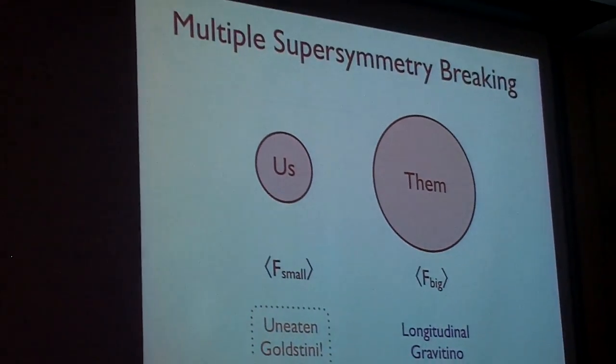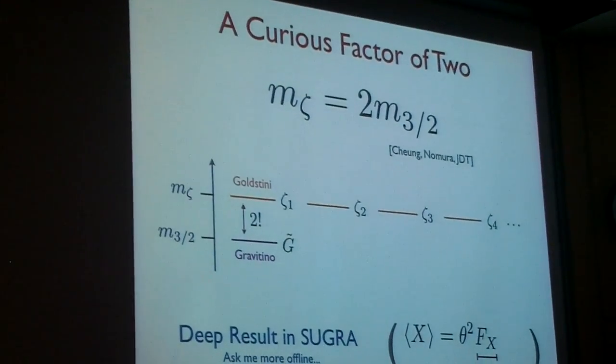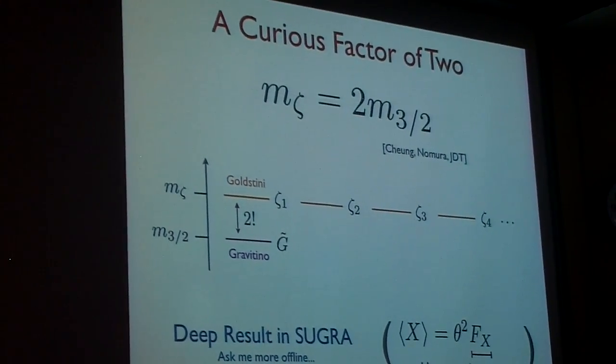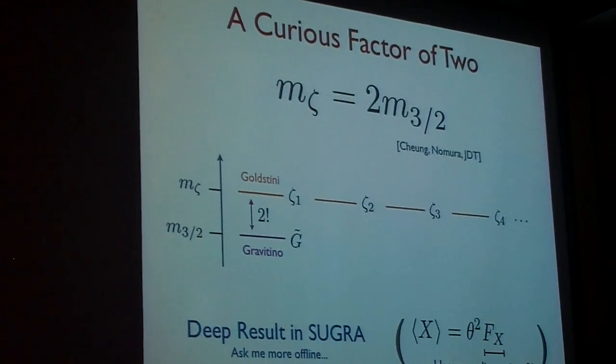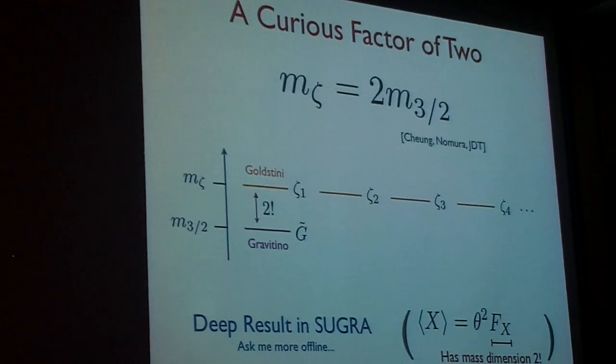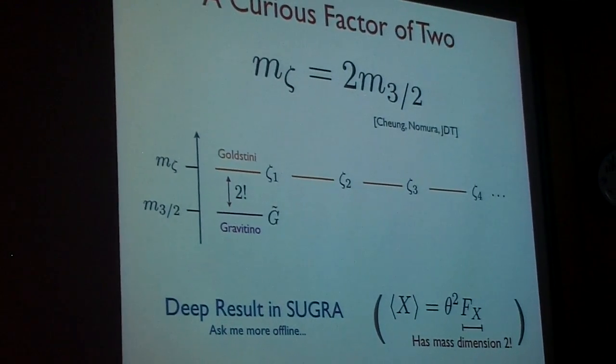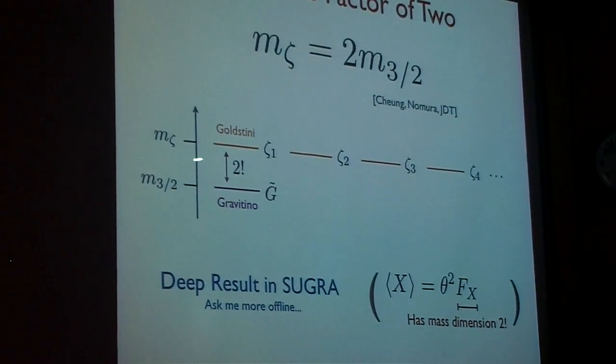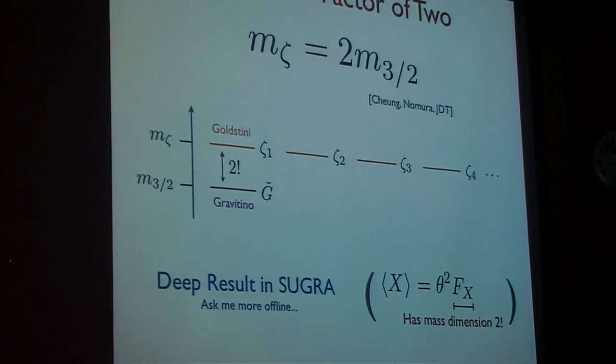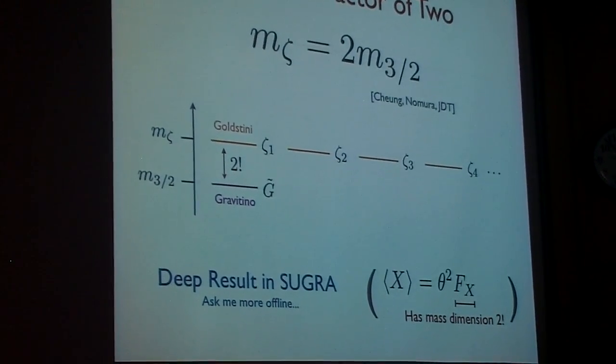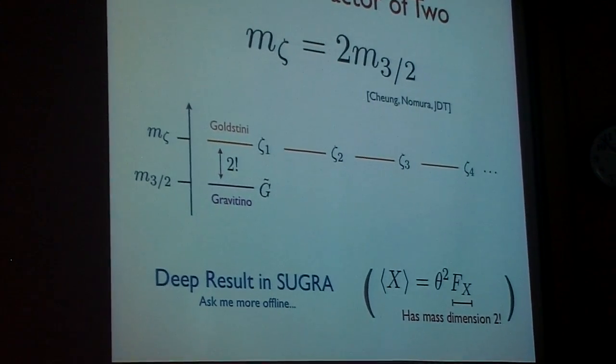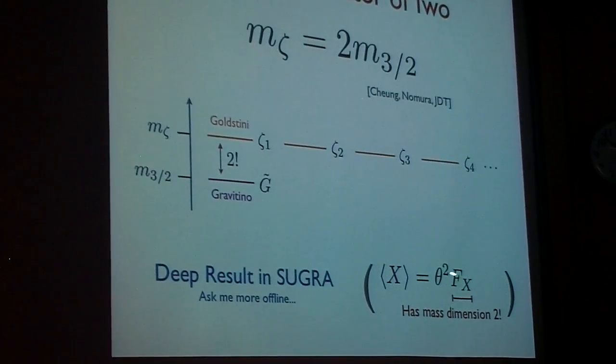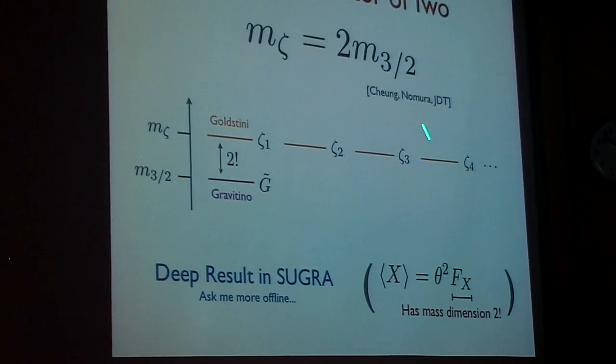Now, this factor of two is, well, insane at first glance. And Yasinori and I spent hours and hours debating whether the factor of two was real. In fact, it's not just a factor of two. If you break supersymmetry 50 times, 50 separate hidden sectors, hidden universes out there, they all want to break supersymmetry. One linear combination of the Goldstinos gets eaten to form the Gravitino, and you have 49 Goldstini all degenerate with a mass two at leading order. Where is this factor of two coming from? Well, this is a deep result in supergravity.